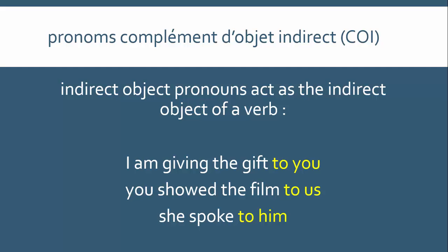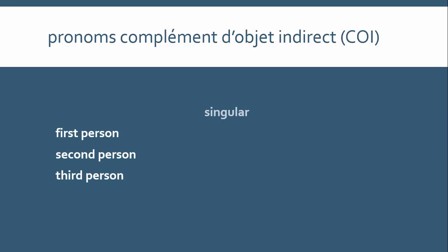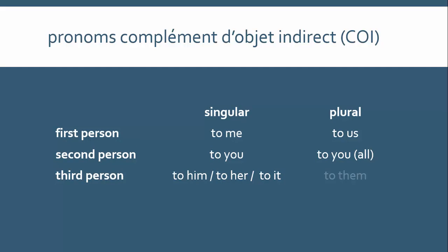That clue is: with indirect objects, we have the word 'to.' It isn't always 'to' — in English it could be any number of prepositions — but there is a reason I'm sticking with 'to' in this video. The indirect object pronouns in English are actually pretty simple; they're just the direct object pronouns with the word 'to' in front of them: to me, to you, to him, to her, to it, to us, to you, to them.